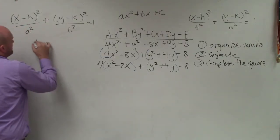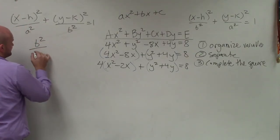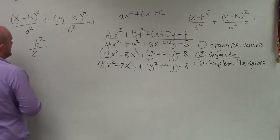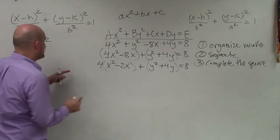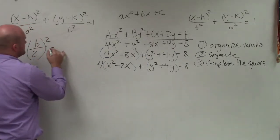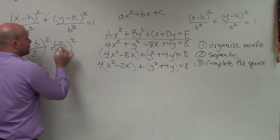So to do that, we take b divided by 2 squared. So therefore, in this case, I'm going to take negative 2 divided by 2 and square it. Well, negative 2 divided by 2 is negative 1.